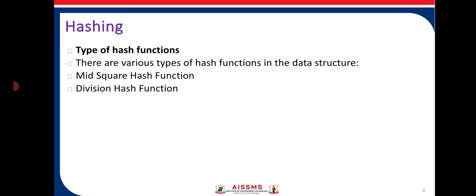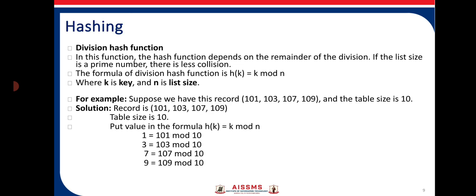There are several hashing methods. Here we are viewing two: the division hash method and the mid-square hash method. The first method is the division hash function, where the hash function depends on the remainder of a division. If the list size is a prime number, we get fewer collisions. The formula for the division hash function is h(k) = k mod n, where k is the key and n is the list size. For example, consider four records: 101, 103, 107, and 109, with a hash table size of 10.